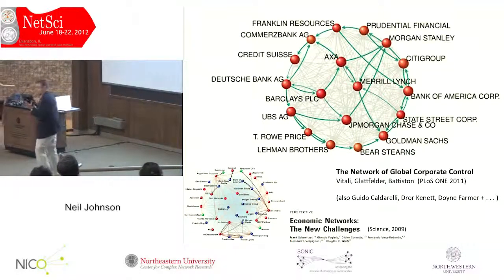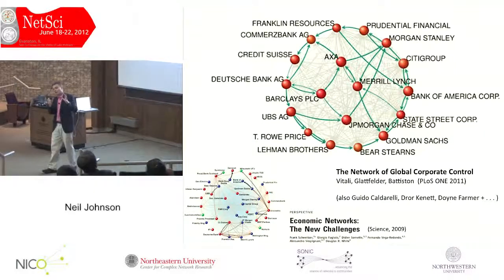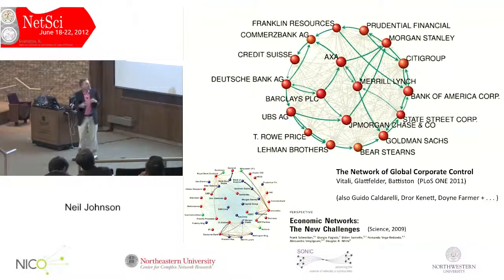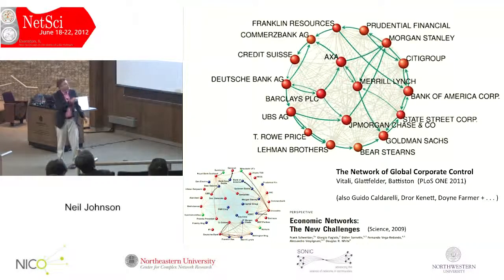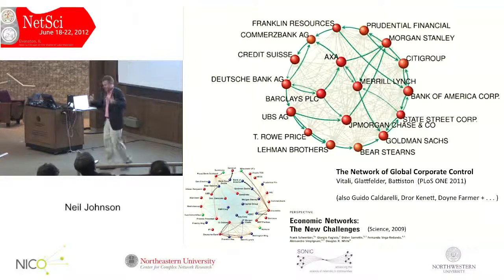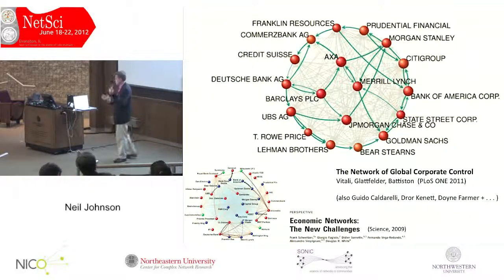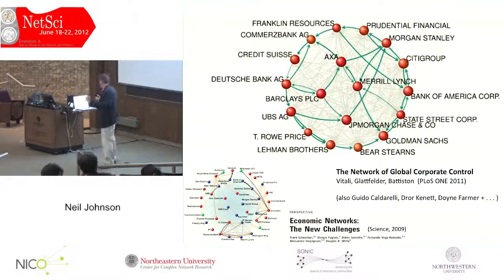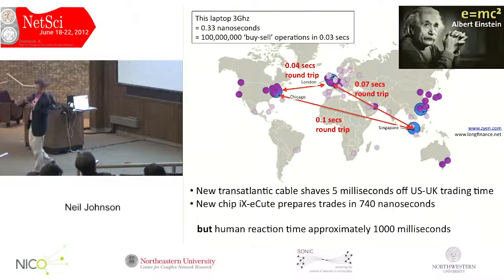There's interesting work looking at networks of financial stability showing which banks are connected to which. But what's missing from this type of view is the role of time. I'm going to talk about the role of time in finance, which touches on a physical speed limit.